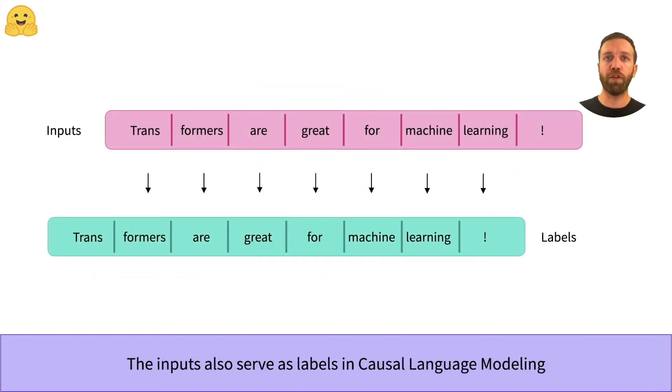So far we have only talked about the inputs for causal language modeling but not the labels needed for supervised training. When we do causal language modeling, we don't require any extra labels for the input sequences as the input sequences themselves are the labels.